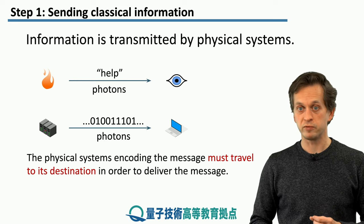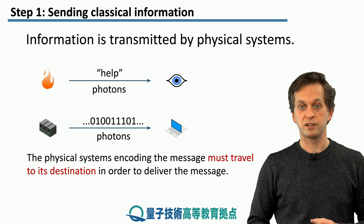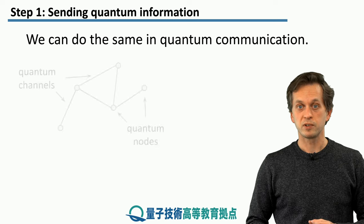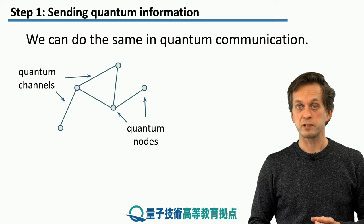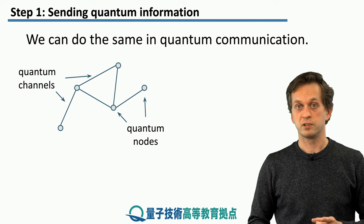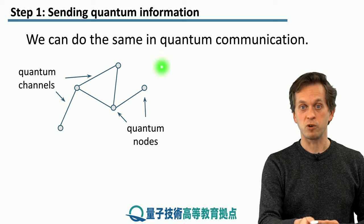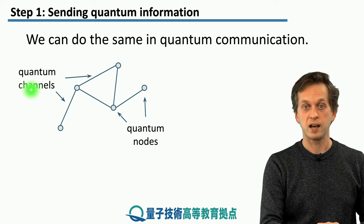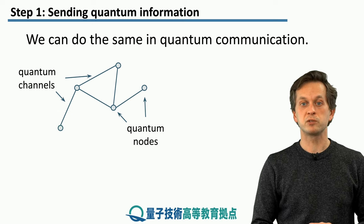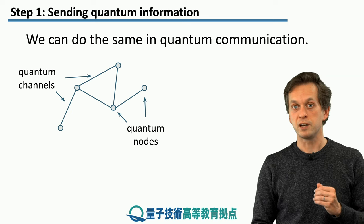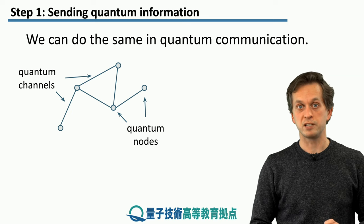However, in quantum physics, it's a little bit different. We can transmit the message without transmitting the physical system. Consider a quantum network like this. Let's say that we want to use the old-fashioned way of transmitting the message with the physical system that is encoding it.